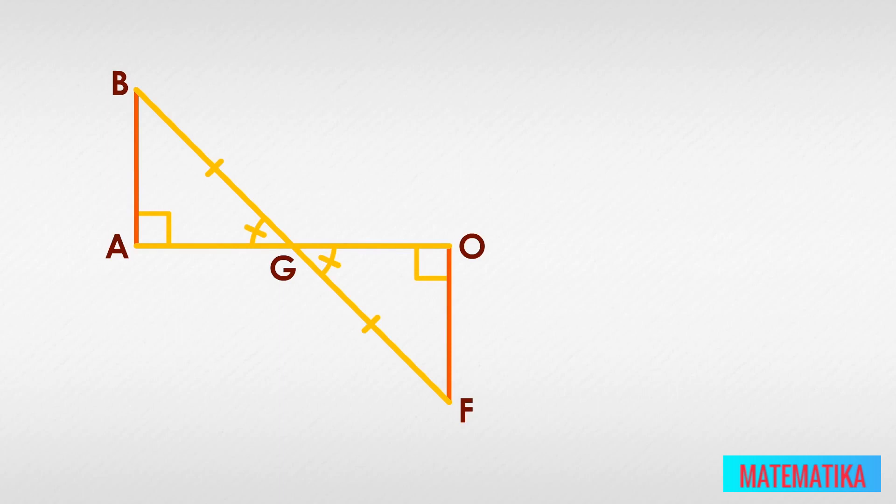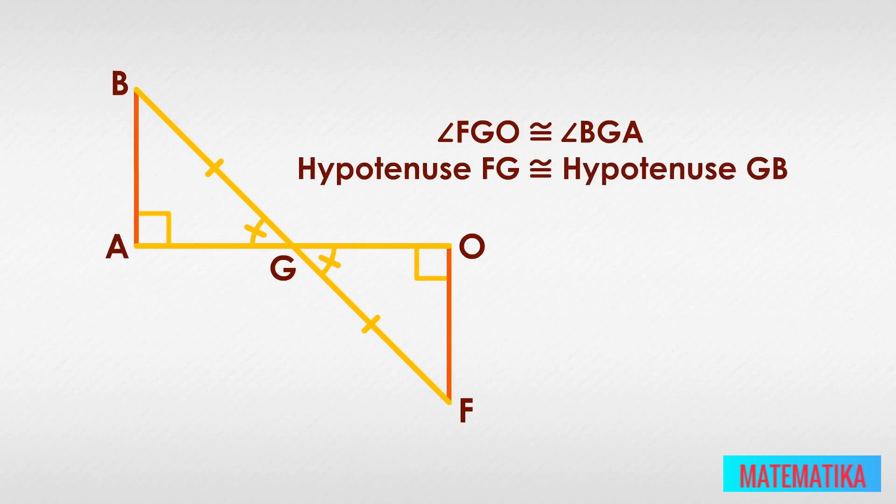Let's make a list. Angle FGO is congruent to angle BGA. Hypotenuse FG is congruent to hypotenuse GB. With just the hypotenuse and one acute angle, we now release the power of the HA theorem and state that triangle FOG is congruent to triangle BAG.